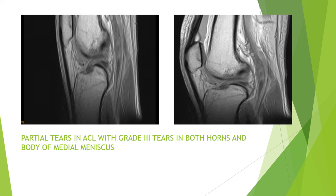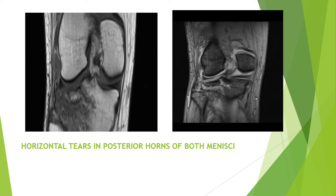These are T1 and T2 weighted images in the sagittal plane showing partial tears in the ACL — anterior cruciate ligament — with grade 3 tears in both horns and body of the medial meniscus. These are T1 and STIR images in the coronal plane showing horizontal tears in the posterior horns of both menisci.